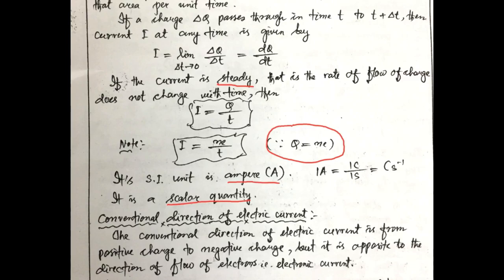It is a scalar quantity. You know that electric current has both magnitude and direction, but it does not obey the triangle or vector addition. So that's why the electric current is considered as scalar quantity.